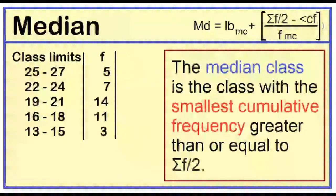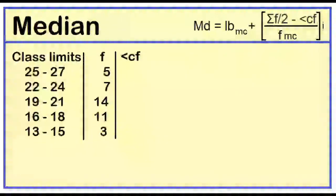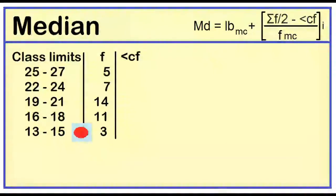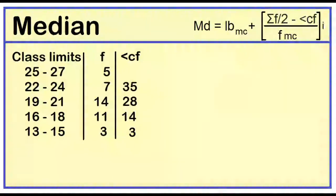Let's add a column for the less-than cumulative frequency. Copy the frequency of the lowest class interval, then add the frequencies successively. The frequency of the lowest class interval is 3. 3 plus 11 is 14. 14 plus 14 is 28. 28 plus 7 is 35. 35 plus 5 is 40.